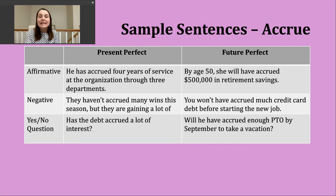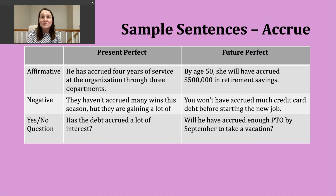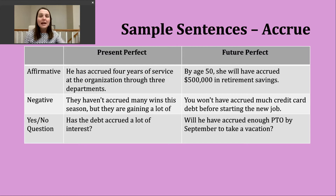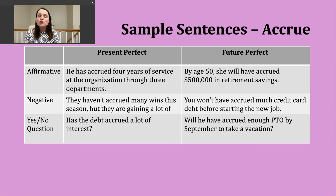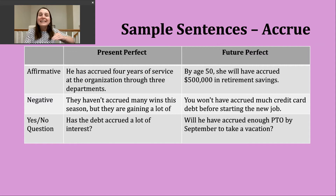For a yes/no question in the future perfect, start with will, then the subject, then have, and then the participle. Example: 'Will he have accrued enough PTO by September to take vacation?' We have a point in time — September — and another common usage of accrue is in connection to paid time off. At some companies, you earn vacation hours per pay period, so here we're wondering whether enough has been accumulated for that person to take a vacation.